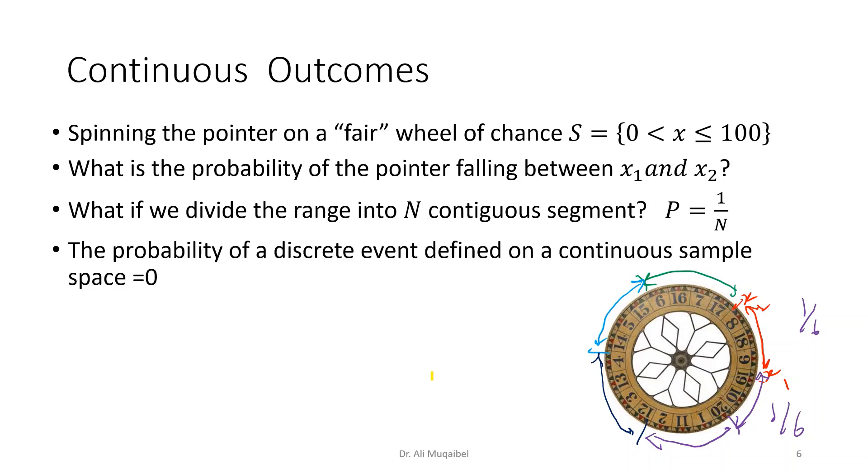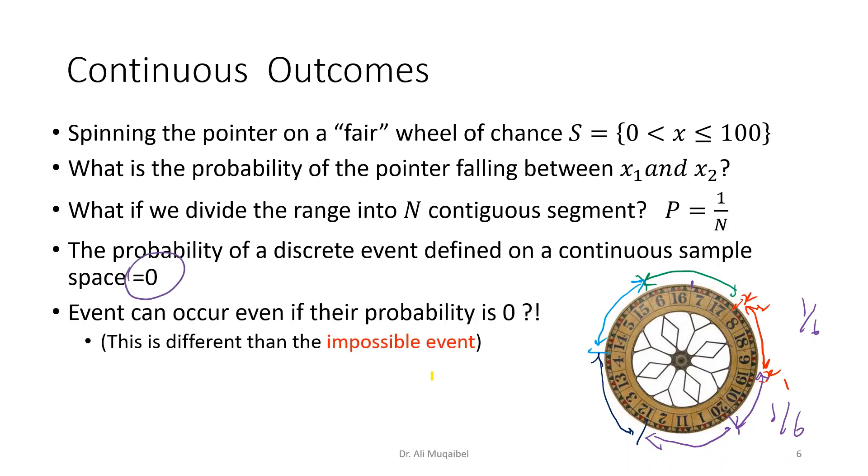Now, the probability of having a discrete event defined on the continuous sample space is zero. If somebody says 'what if we get exactly this number with accuracy of point zero zero zero zero zero?' then we say it's equal to zero. Why is the probability equal to zero? Because we have infinite scenarios, infinite possibilities, we're picking one of them.